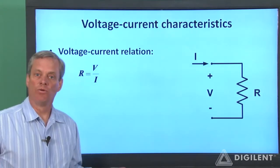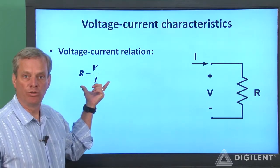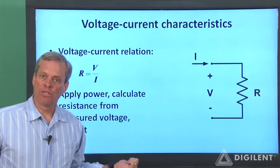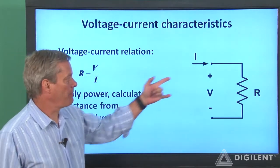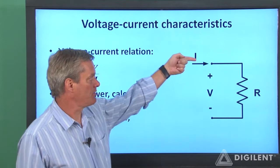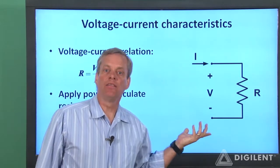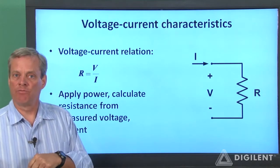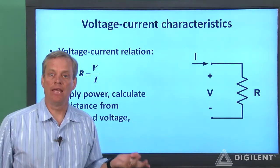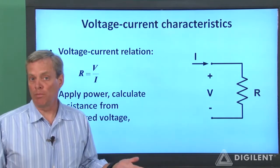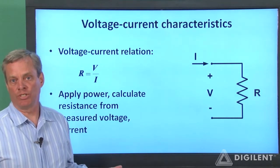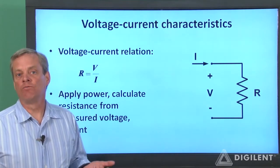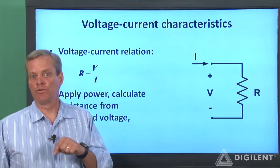Resistors are characterized by their resistance, which is simply a relationship between the voltage and current at their terminals. We can estimate resistance by applying a voltage across the resistor, measuring the current, and taking the ratio of voltage to current. If we do this only once, we'll get an estimate of resistance. However, any experimental data is prone to errors, so it's probably better to apply several different voltage levels to the resistor and measure the corresponding currents, then calculate the resistance for each voltage-current combination.